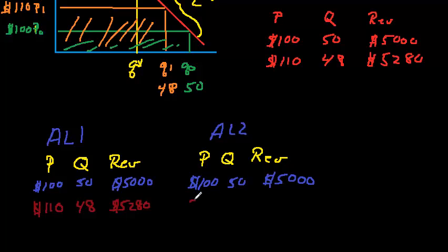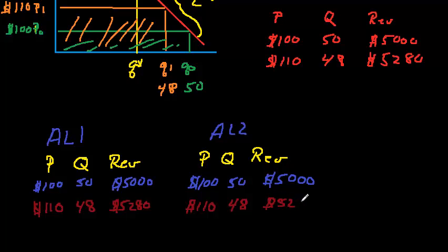Let's first consider the different responses that airline two can have. If they go along with the increase — they also increase their fare from $100 to $110 — they get 48 seats as a result, and their revenue increases to $5,280. So under this scenario, both airlines increase their fare and both increase revenue as a result.